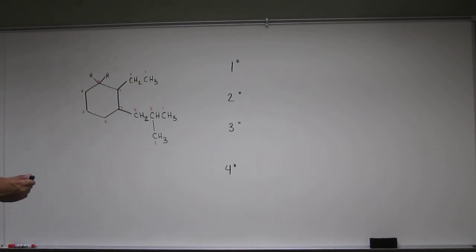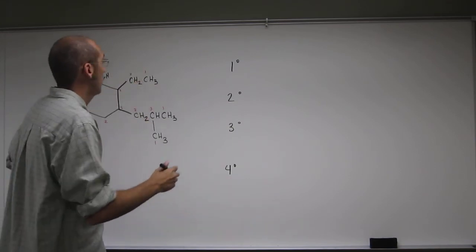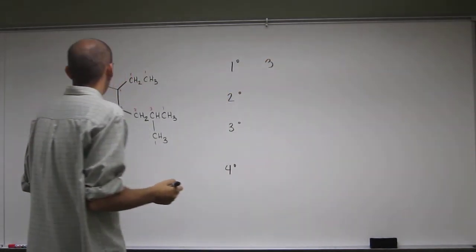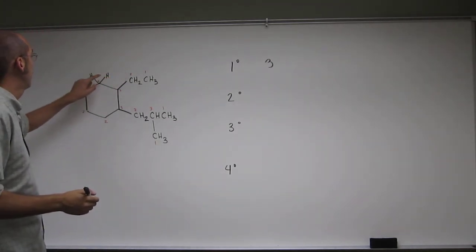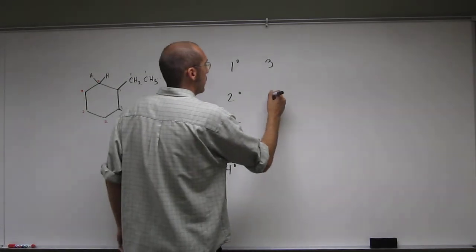Let's just go ahead and count up all of our numbers now. We've got one, two, three primaries. Secondaries, one, two, three, four, five, six secondaries.